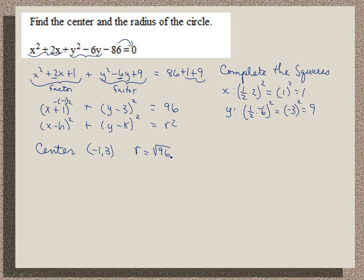Now in this case we can simplify. The square root of 96 can be broken up into, 96 is 16 times 6. The square root of 16 is 4, so you get 4 square root of 6 is the radius.